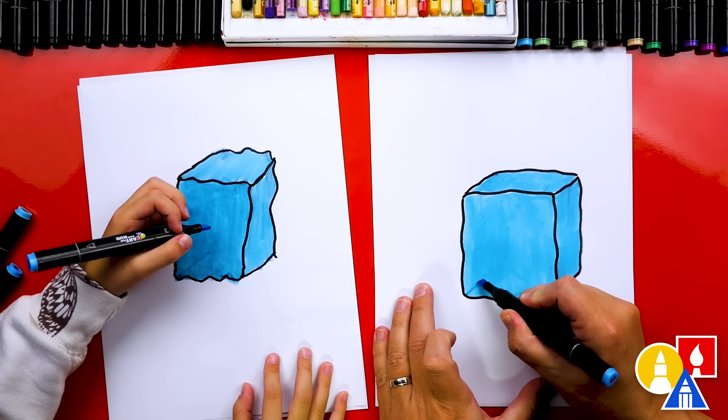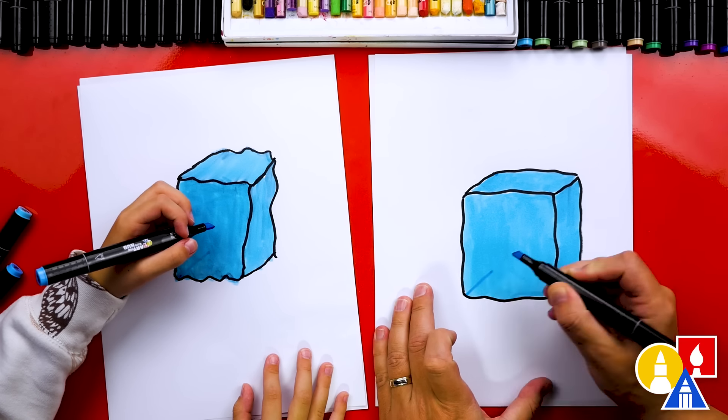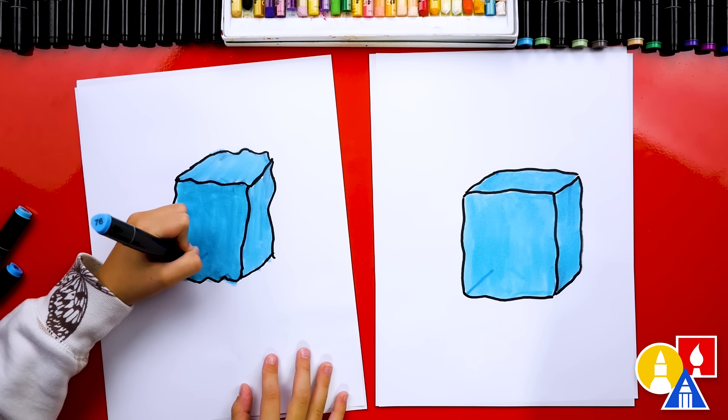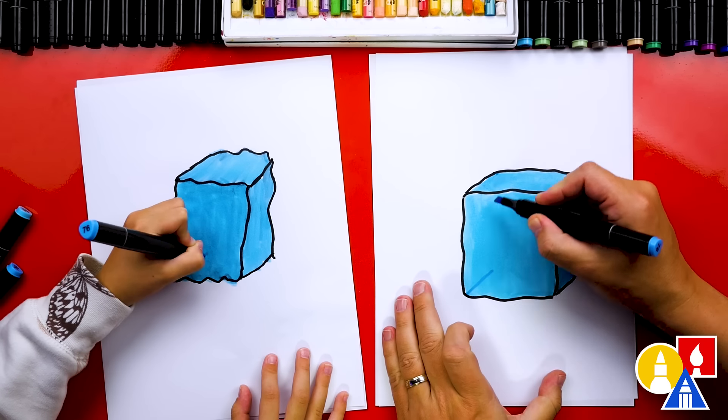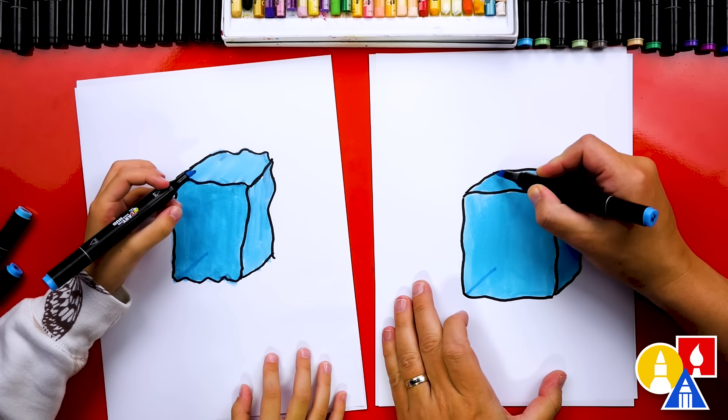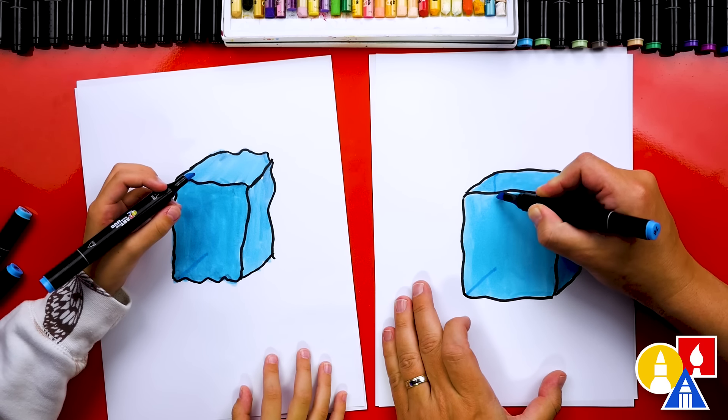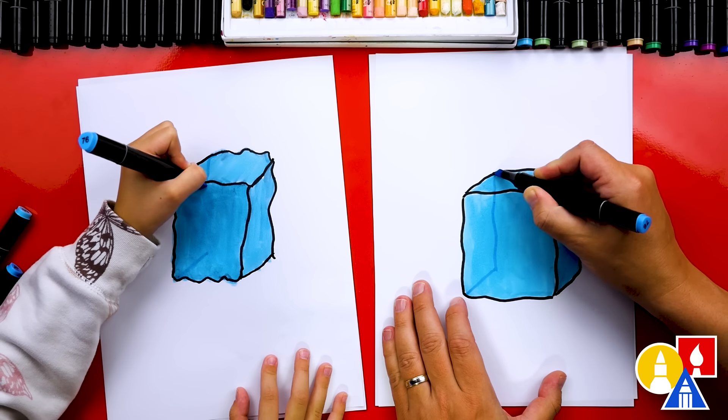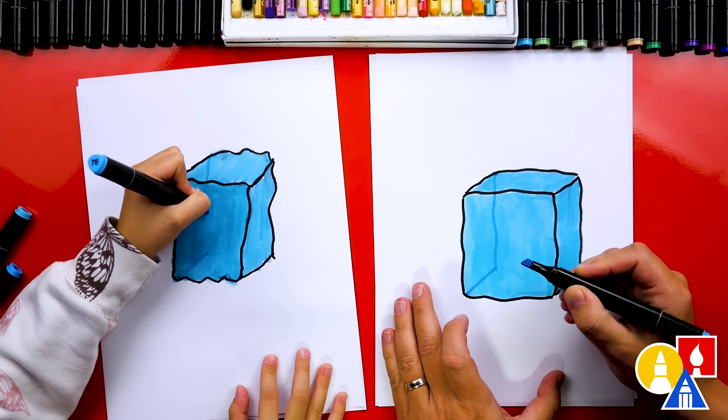I'm going to do the same line and see how we're layering it on top. You can even go over it again. Make it a little darker. There you go. And then we're going to draw. I'm going to make mine a little longer.